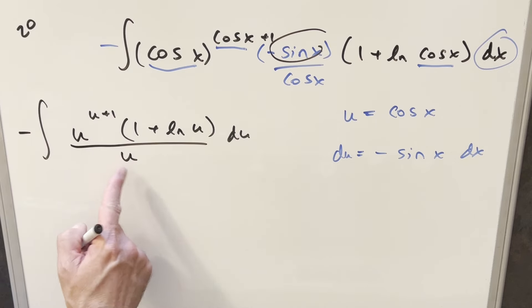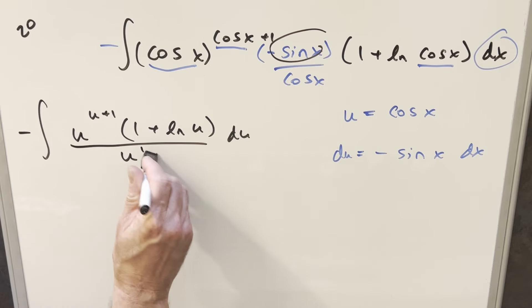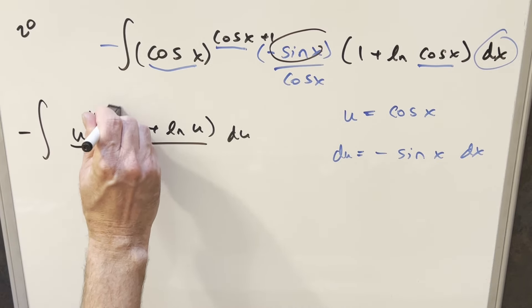But I can take this u and divide it into this u to the u plus 1. That's just going to be, think of it like a 1 exponent on that. So when you divide that in there, I can get rid of this and just take one of these away.